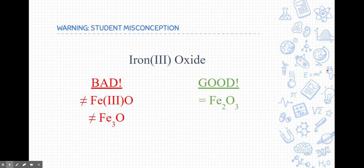All right, here's a couple of misconceptions that I want to make sure to talk to you about. On the left side, you notice that here's some bad examples of things that students do that are not good. Let's say we were given this problem iron three oxide. Some students try to write a formula that includes Roman numerals. Chemical formulas never include Roman numerals.